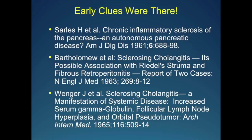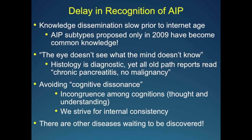Why did it go unrecognized? Knowledge dissemination prior to the internet era was pretty slow. We proposed type 1 and type 2 in 2009, and within months, others were talking about it — in the internet era, it's very easy to disseminate knowledge. More importantly, the eye doesn't see what the mind doesn't know. If you go back and look at histology of resected AIP cases, the pathology report just says 'chronic pancreatitis, no malignancy.' Today, if you show it to a pathologist, they'll say this is AIP.